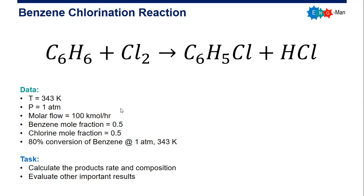Here is our data: the temperature, the pressure at one atmosphere. The total molar flow of the feed is 100 kilomole per hour, with mole fractions of benzene 0.5 and chlorine 0.5.